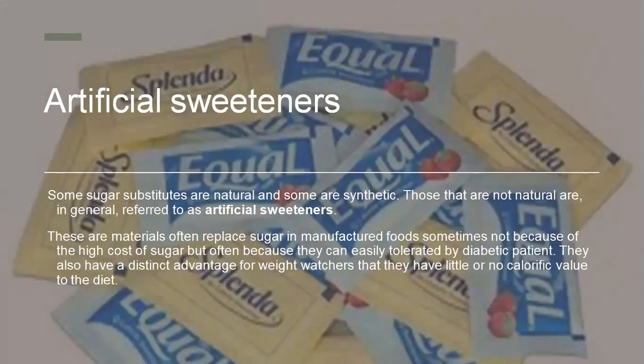Now after these kinds of sugars, we will move to artificial sweeteners. There are many artificial sweeteners available in the market. These are materials that often replace sugar in manufactured foods, sometimes because of the high cost of sugar, but often because they can be easily tolerated by diabetic patients. Some sugar substitutes are natural and some are synthetic. Those that are not natural are generally referred to as artificial sweeteners. They also have a distinct advantage for weight watchers in that they have little or no caloric value to the diet.